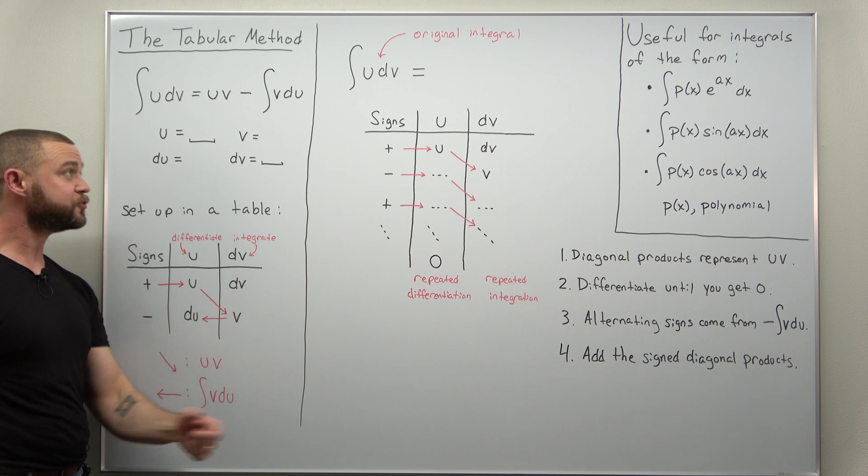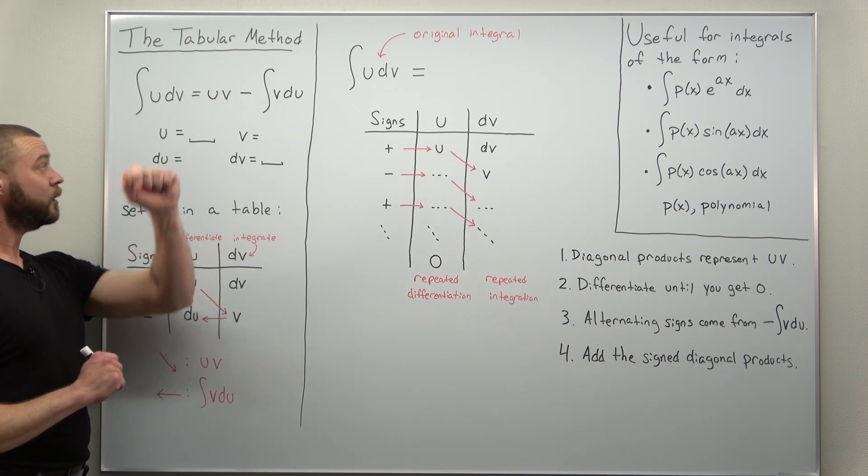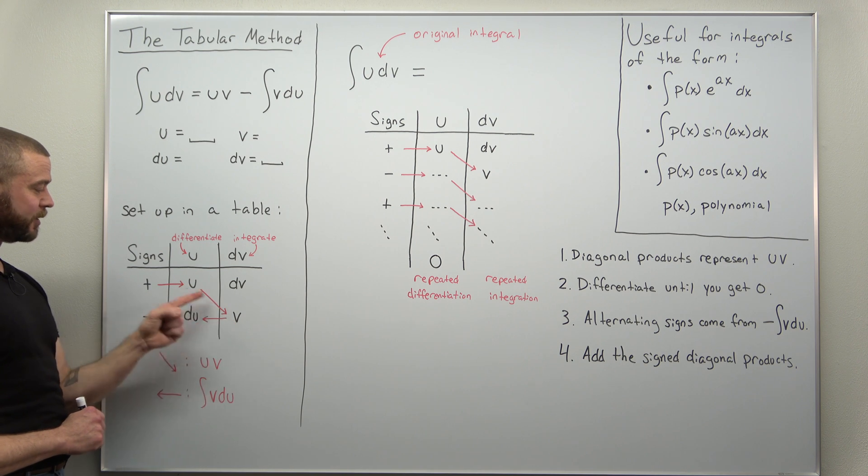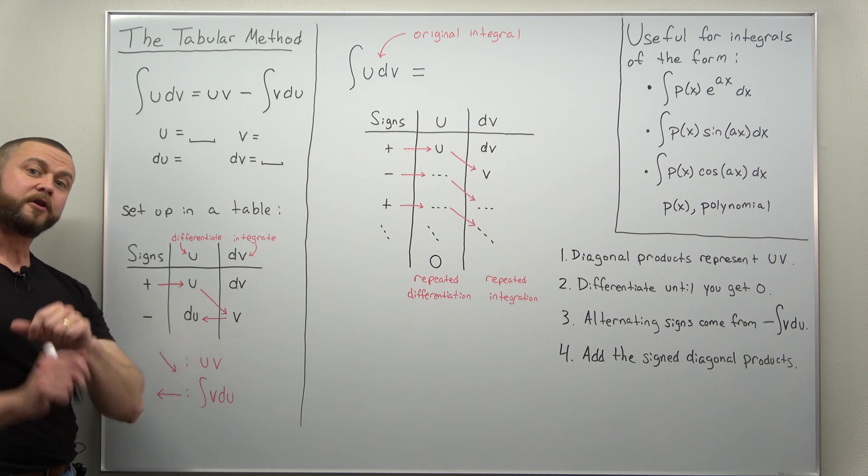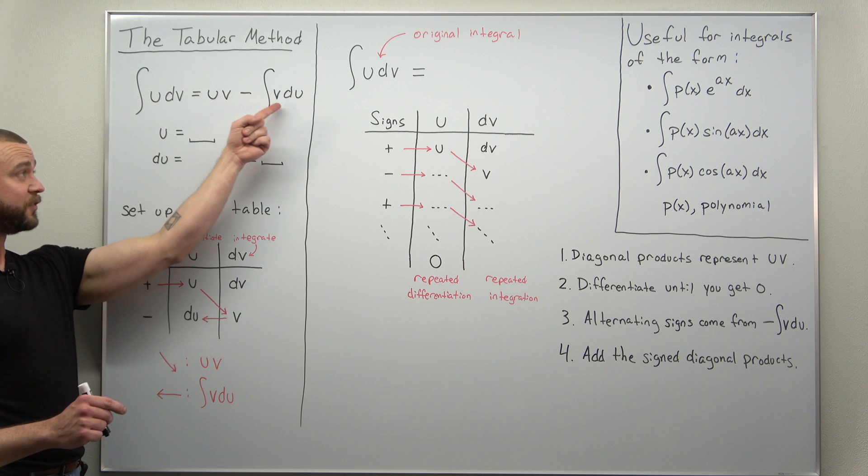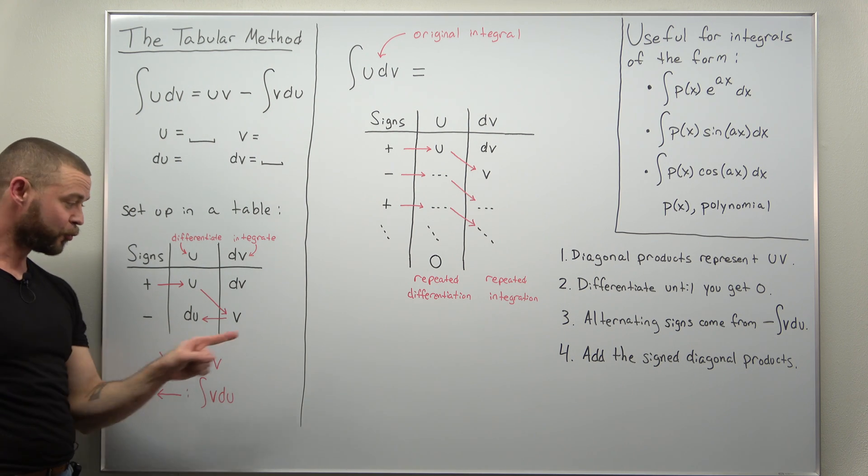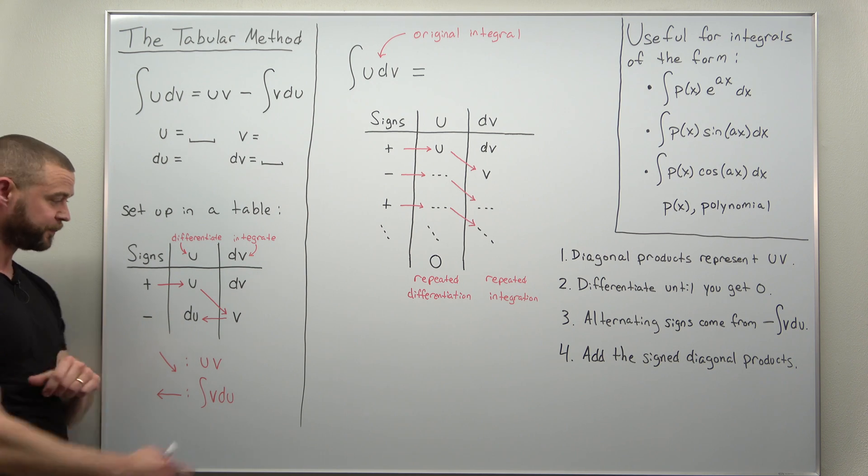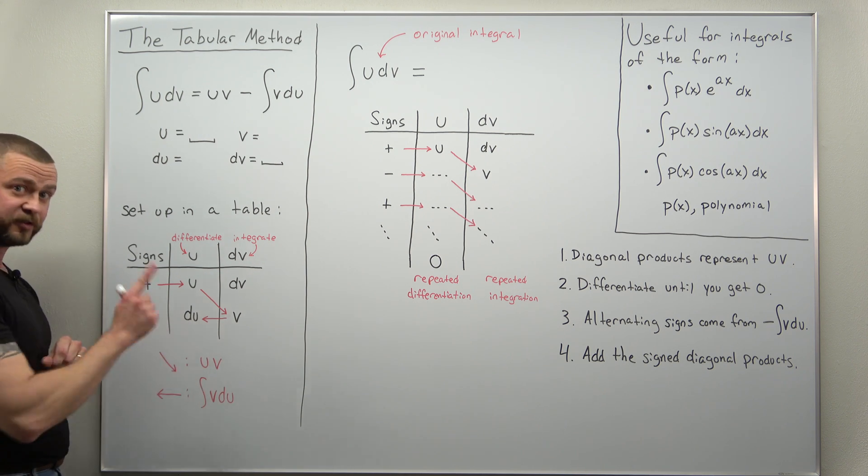Now how do we extract our answer, the integration by parts formula? Well, notice your diagonal there: u times v gives you the first term. Your integral of v du, or minus the integral of v du, that's going from the rightmost column across the left.